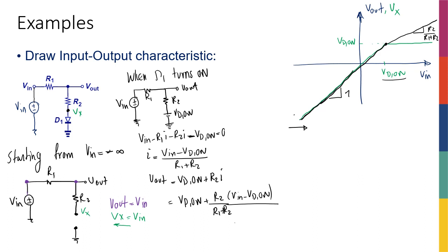Reviewing the example: the diode has two conditions — off and on — and I analyze the circuit for each. Then I find the turning point by tracking Vx. Vx equals Vin while the diode is off, and once Vin reaches Vd_on, Vx becomes fixed at Vd_on, the diode turns on, and I switch to the on-state circuit analysis.